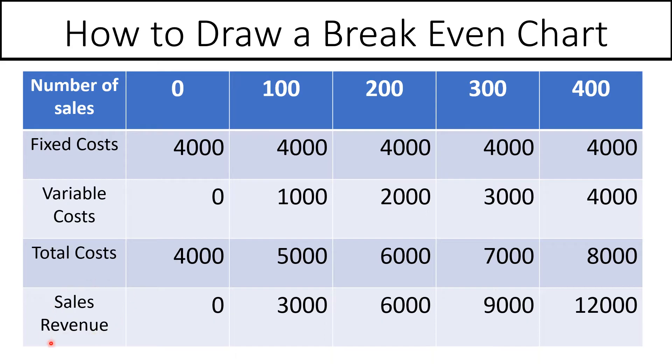We're now going to see how much money they are going to earn. So their sales revenue is how much they get from selling it. If they sell none, they will get nothing. If they're selling at £30 an item, if they sell 100 items, they'll get £3,000. 200 items, £6,000.